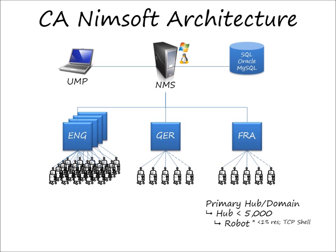A robot is an agent deployed to a server. Customers can also opt for agentless, which is represented by a dotted line in the diagram. These robots are very lightweight, consuming less than 1% of the resources. The reason for that is it's simply a TCP shell.